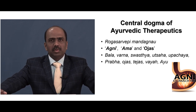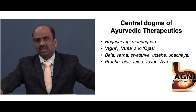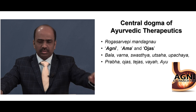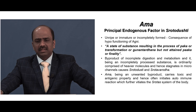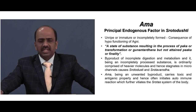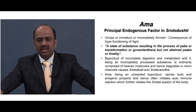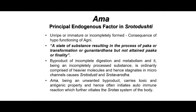When Agni is properly maintained, Ojas — the vital fluid that is the essence of all seven bodily tissues and the life-giving force — is sustained. Ama is the principal endogenous factor in Srotha Dhushti: a substance resulting from incomplete paka or transformation. Being an unwanted byproduct, Ama carries toxic and antigenic properties and often initiates autoimmune reactions, further vitiating the Srotha system of the body.